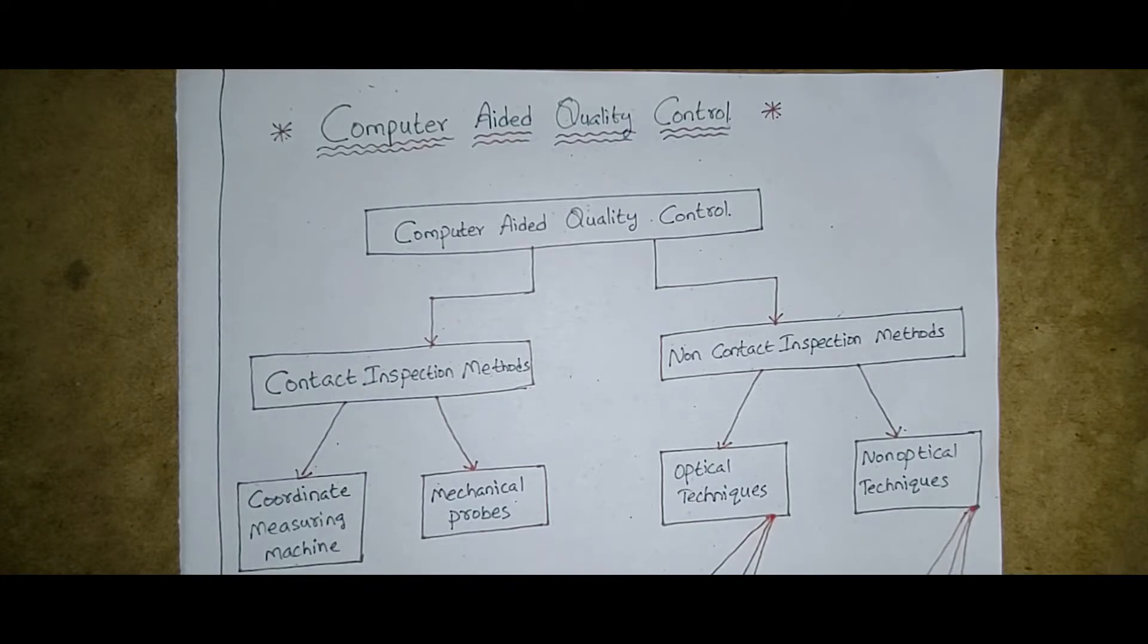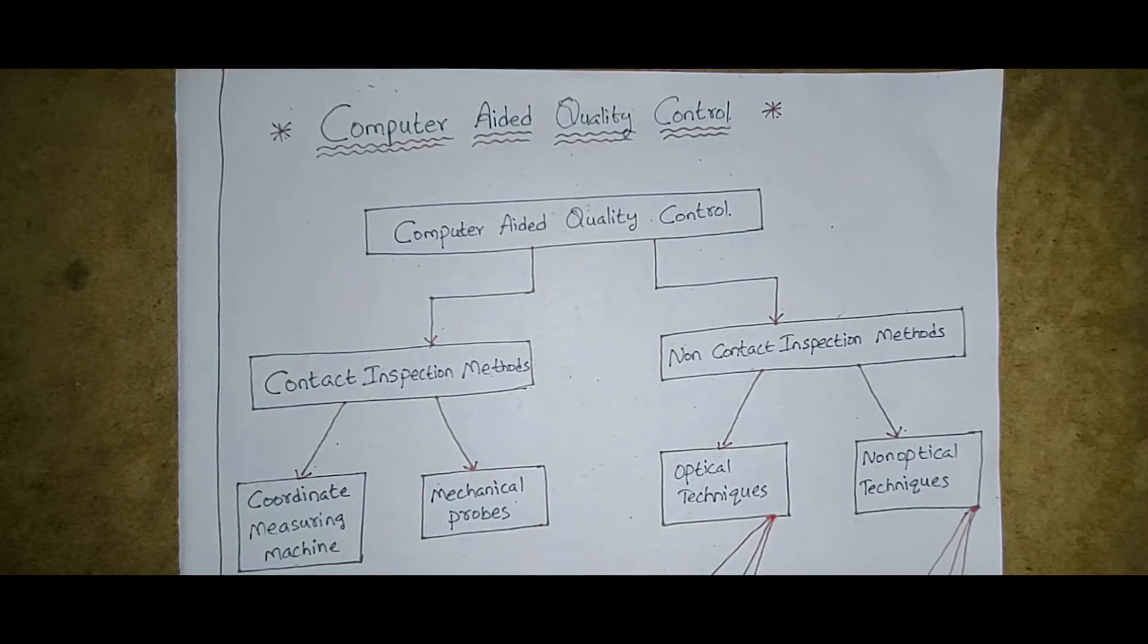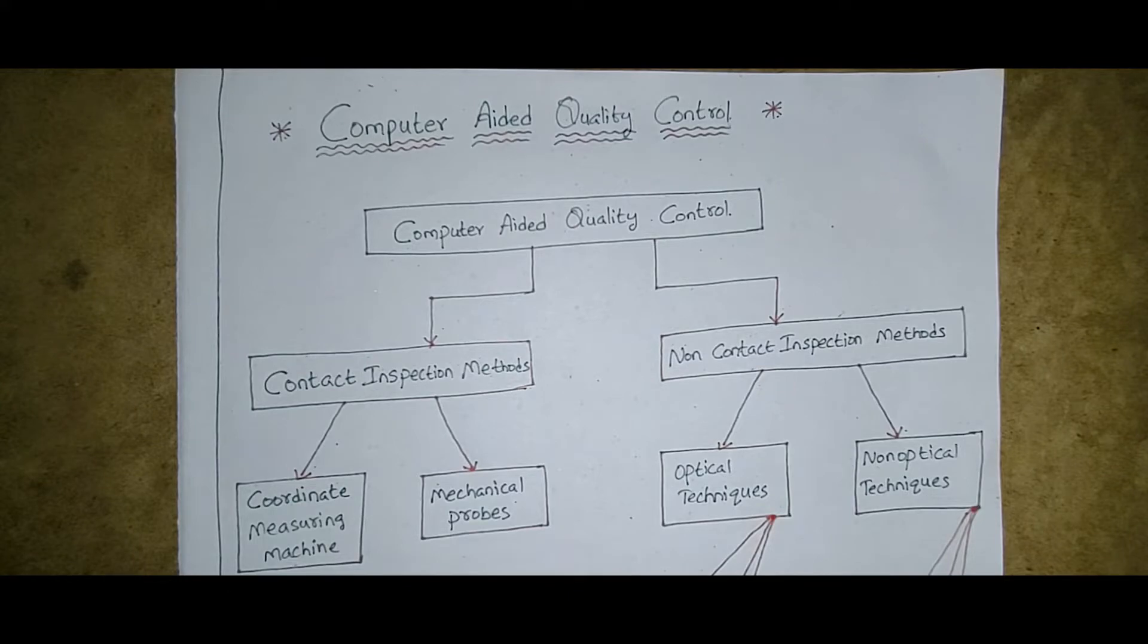Computer-aided quality control means, as we have seen in our previous classes, a centralized computer system is there. The computer will be controlling all the commands, everything, and it will check the quality. Once it is considering the quality, we can get a rich level of quality.